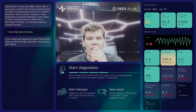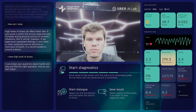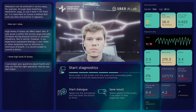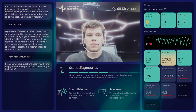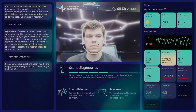User: How can I relax? Assistant: Relaxation can be achieved in various ways — for example, through deep breathing, meditation, yoga, or just a walk in the fresh air. It is important to find a method that suits you best and practice it regularly.